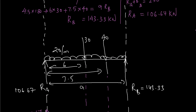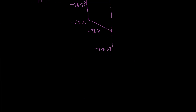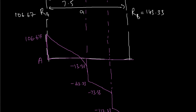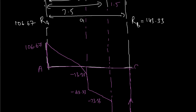From 7.5 meters to the end there is another 1.5 meters of UDL at 20 kN/m, adding another 30 kN downward, giving minus 143.33 kN continuing to the end point. At B, the reaction RB of 143.33 kN acts upward, bringing the shear force back to zero — confirming equilibrium. We will continue this problem in the next video.